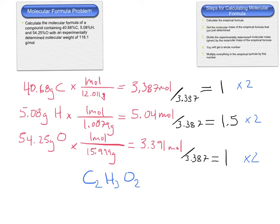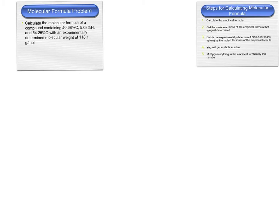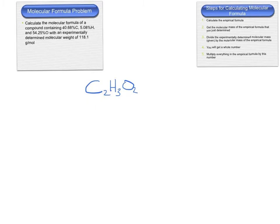After multiplying by 2, our empirical formula is C2H3O2. This molecule doesn't necessarily have exactly two carbons, three hydrogens, and two oxygens — that's just the ratio. Now for step two, we get the molecular mass of that empirical formula. We have two carbons, three hydrogens, and two oxygens. Adding up the molar masses from the periodic table, the molecular mass of C2H3O2 is 59.04 grams per mole.